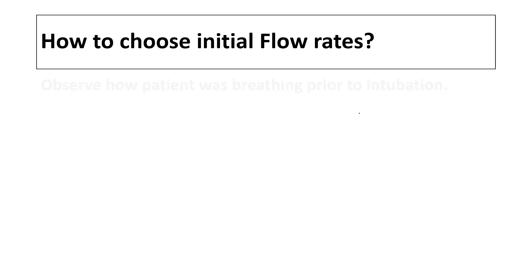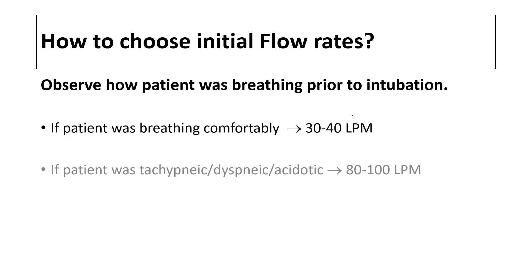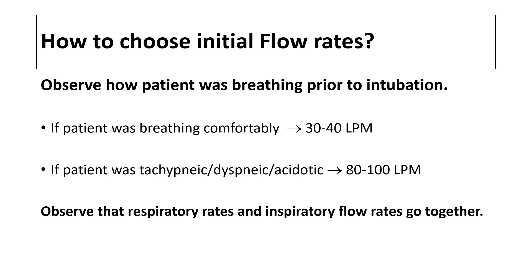How do you choose initial flow rates? Again it depends upon how the patient was breathing prior to intubation. If the patient is breathing nice and comfortably, you start at normal flow rates, which is around 30 to 40 liters per minute. If the patient was distressed or struggling to breathe, or is acidotic, it's better to start at higher flow rates. One thing to note is that respiratory rates and inspiratory flow rates go together — if your respiratory rate rises, so does your inspiratory flow rate.